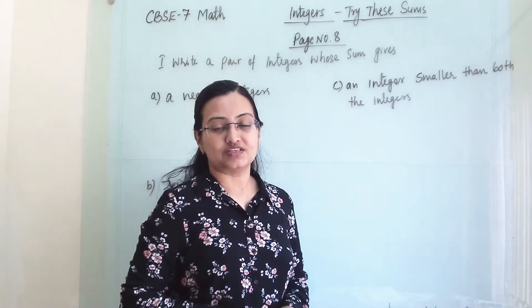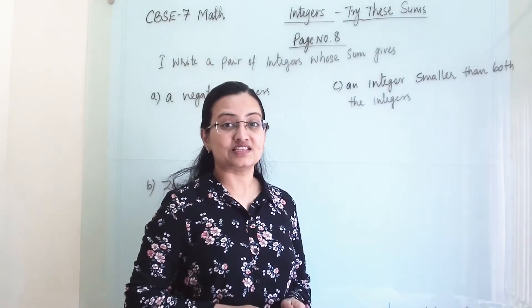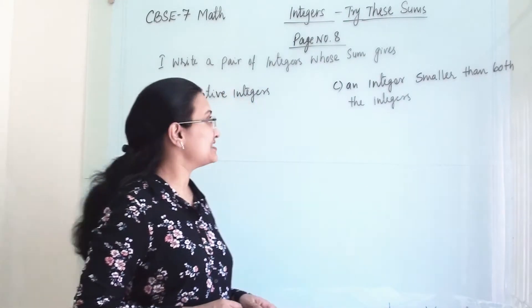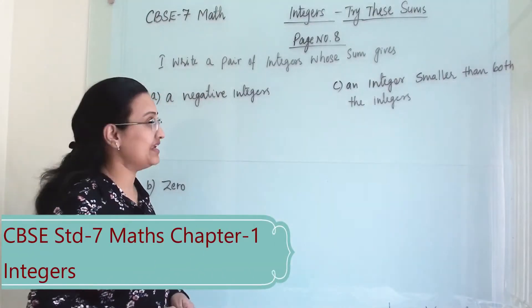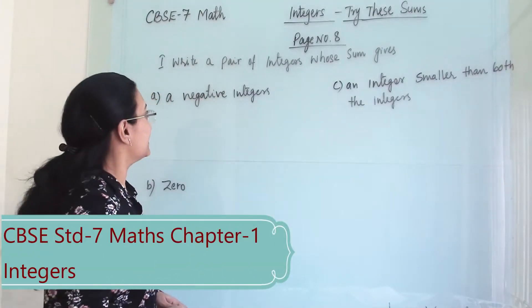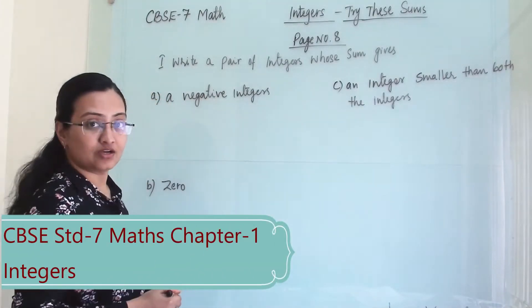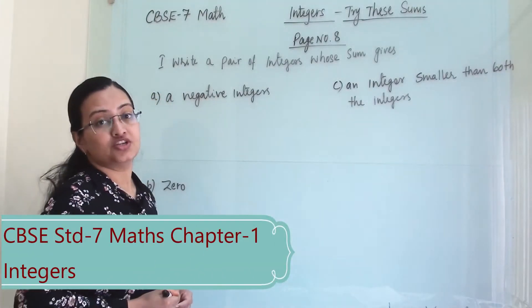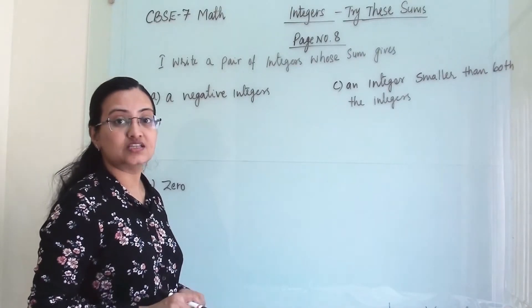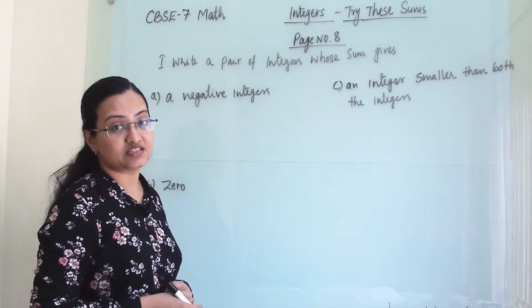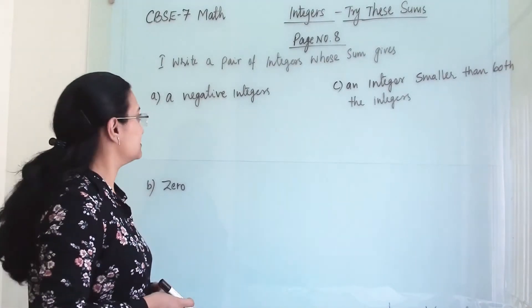Welcome to Learn Yourself. Our next set of examples are from page number 8 and these are 'Try This' sums from Chapter number 1, Integers, under CBSE Standard 7 syllabus.